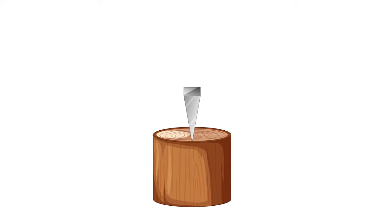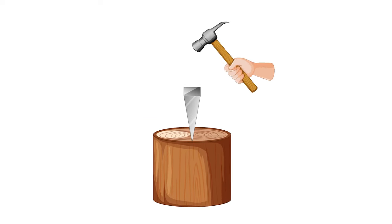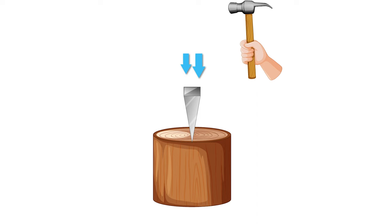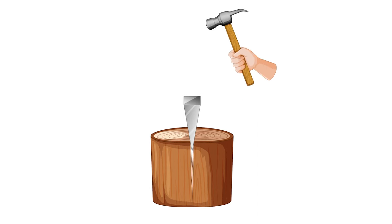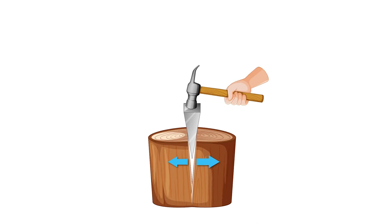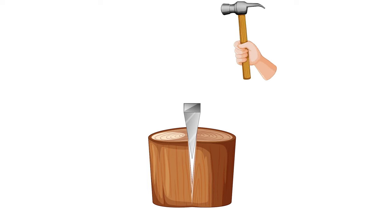A wedge is a triangular shaped simple machine that transforms the direction of force, often converting a downward force into a horizontal one. It functions through its ability to spread or split objects.